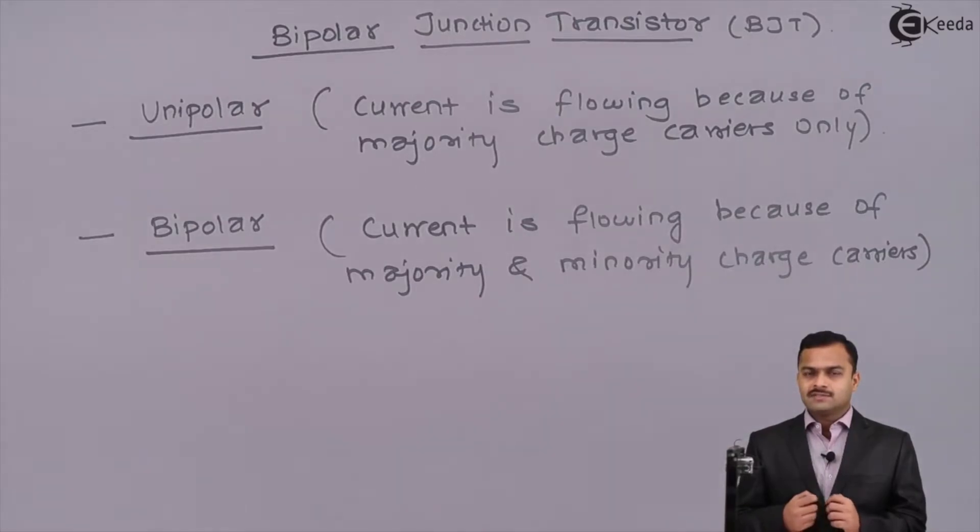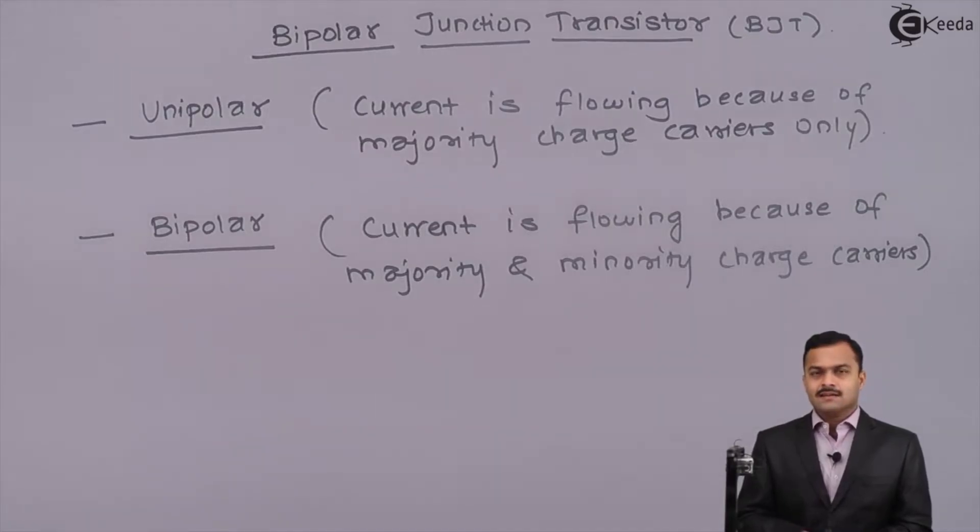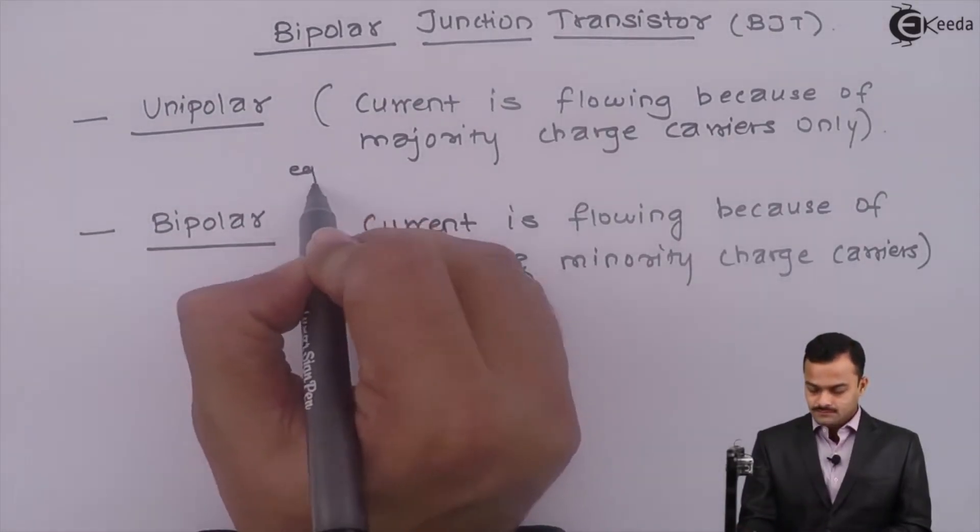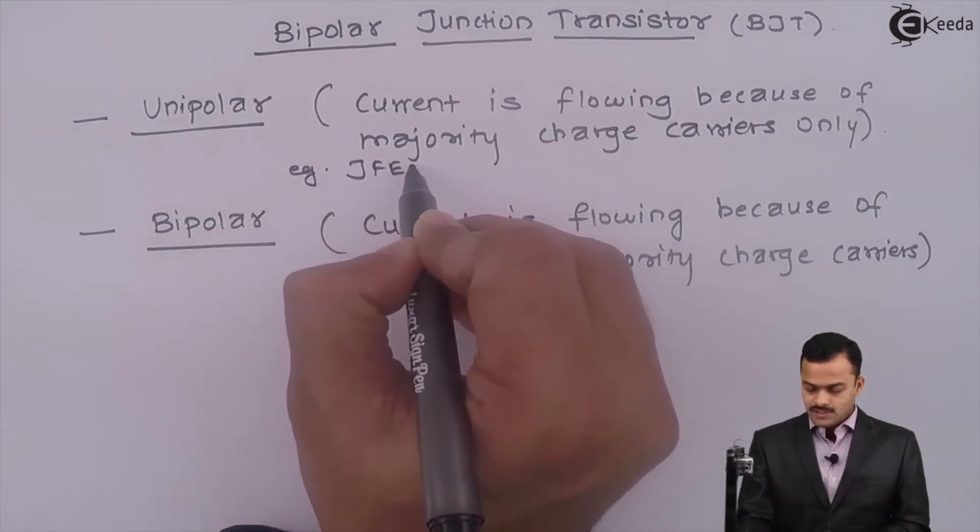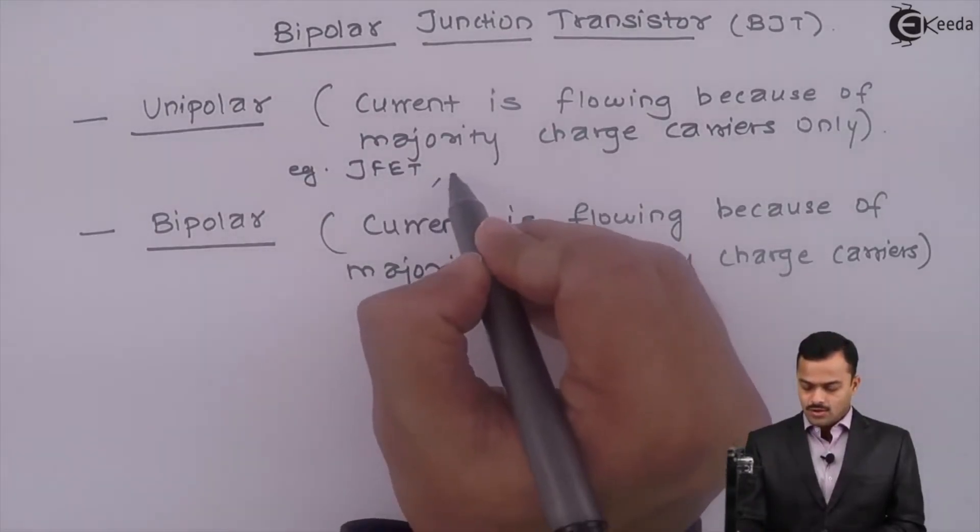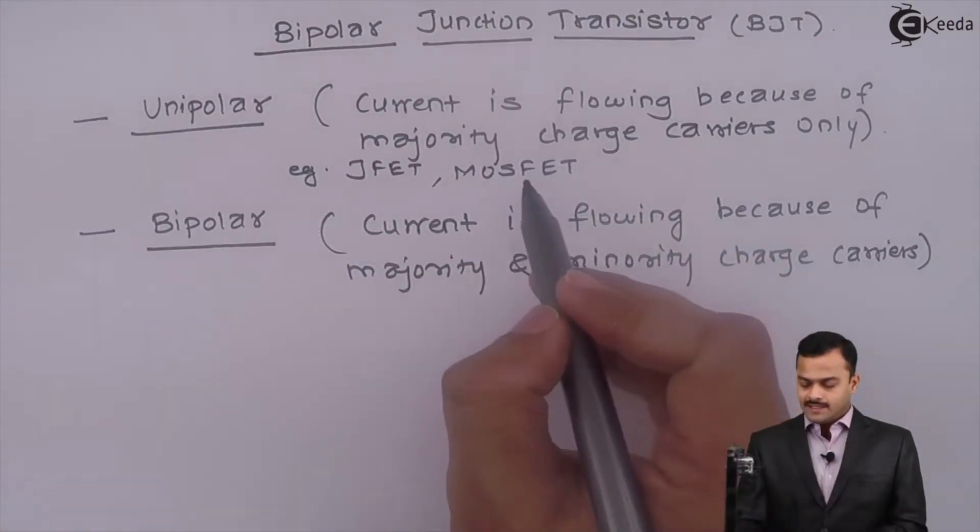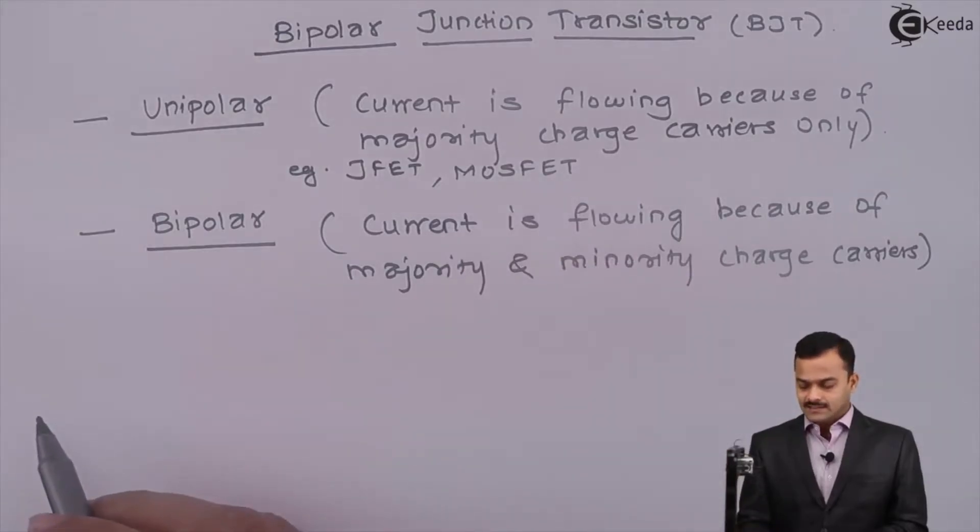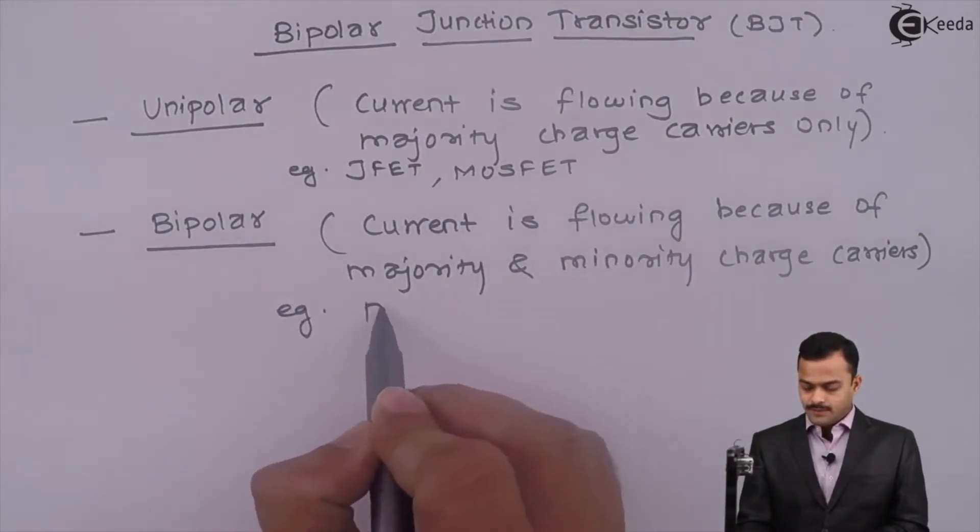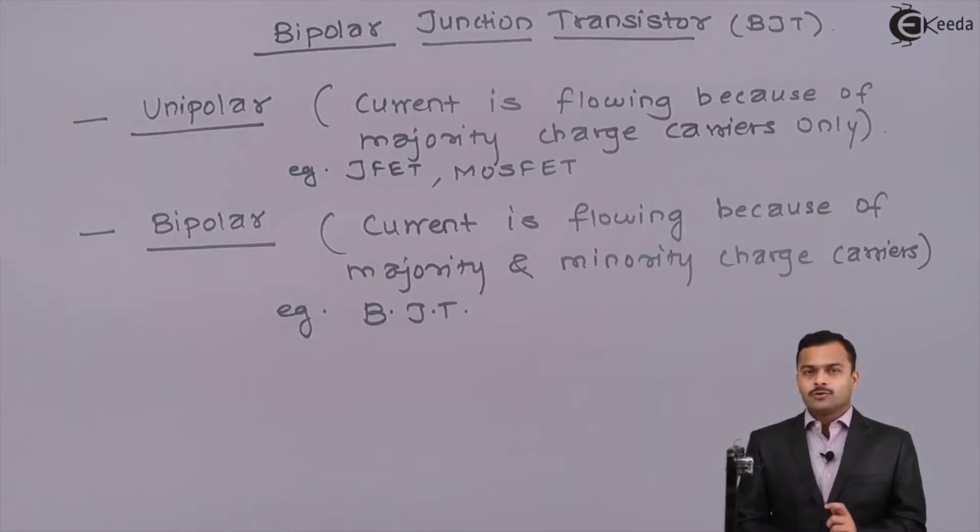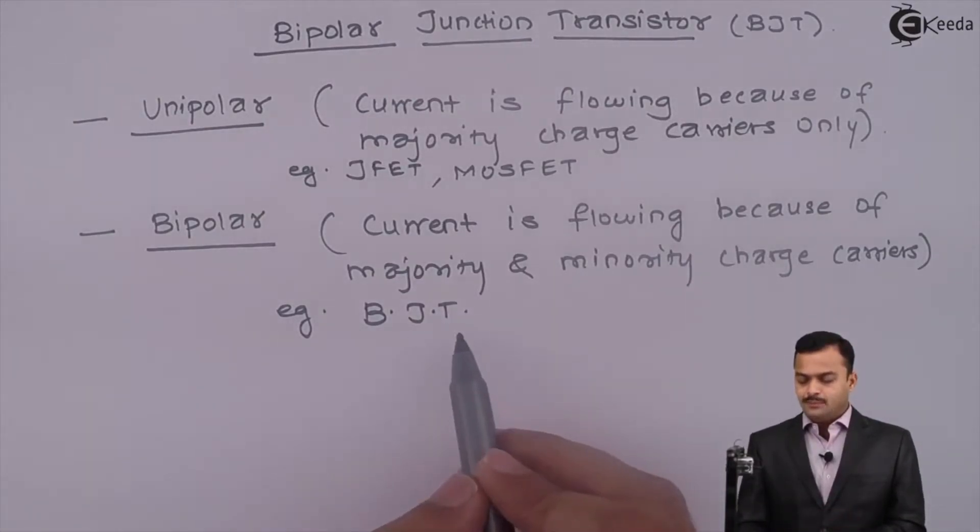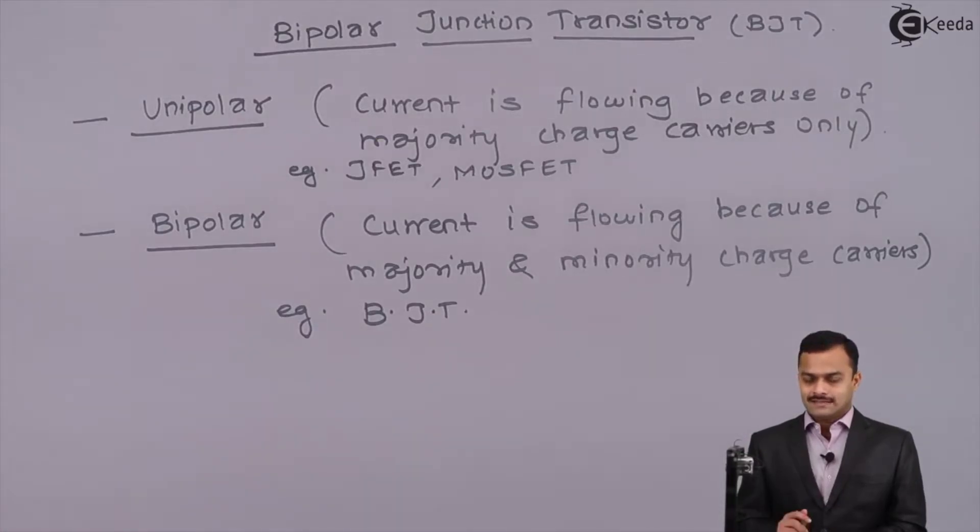But in BJT, which is a bipolar junction transistor, we are getting current because of both the charge carriers. But that is not the case for a unipolar transistor. Example of a unipolar transistor is JFET, junction field effect transistor, or MOSFET, metal oxide semiconductor field effect transistor. Whereas bipolar is simply BJT. Here we are going to focus on BJT, that is bipolar junction transistor.